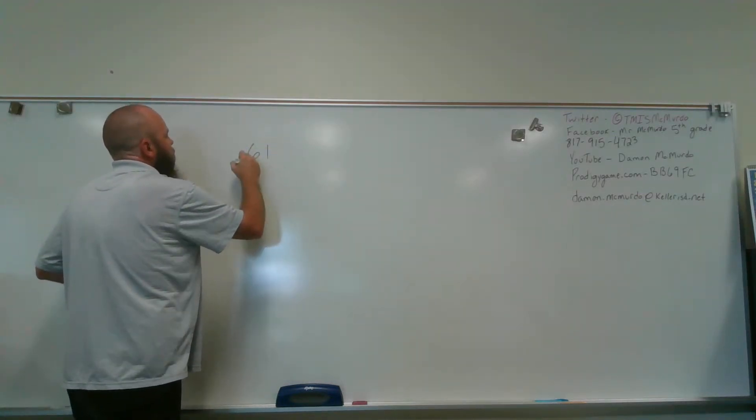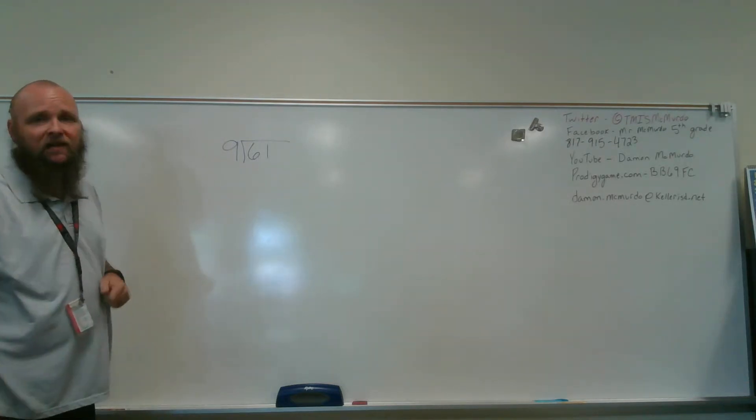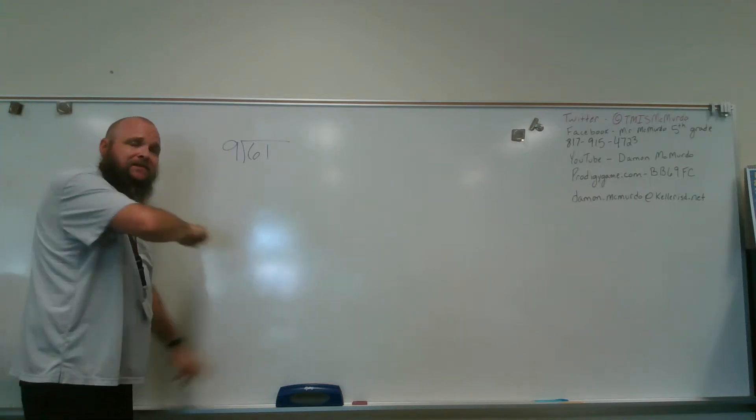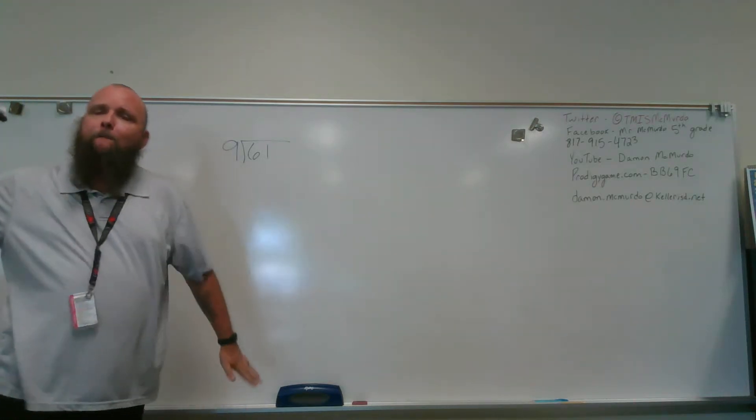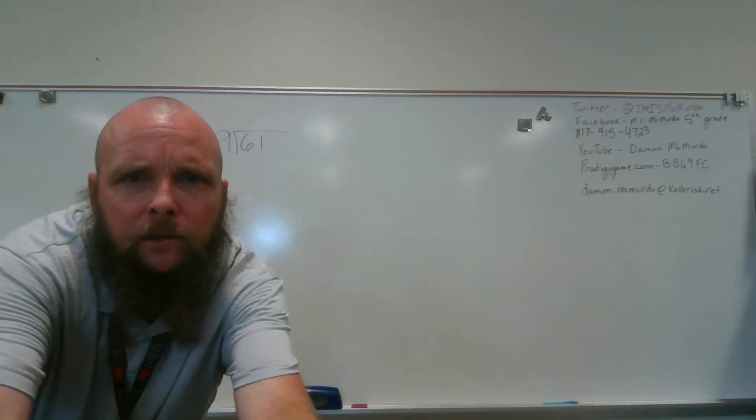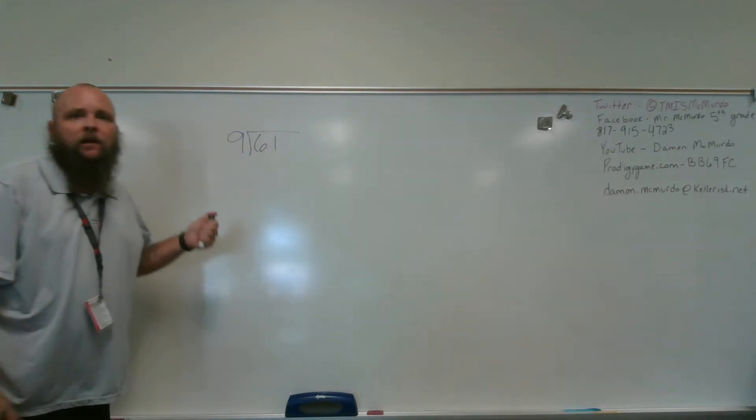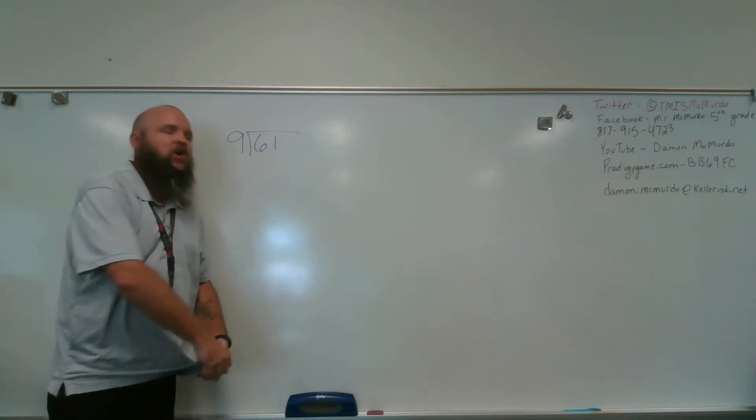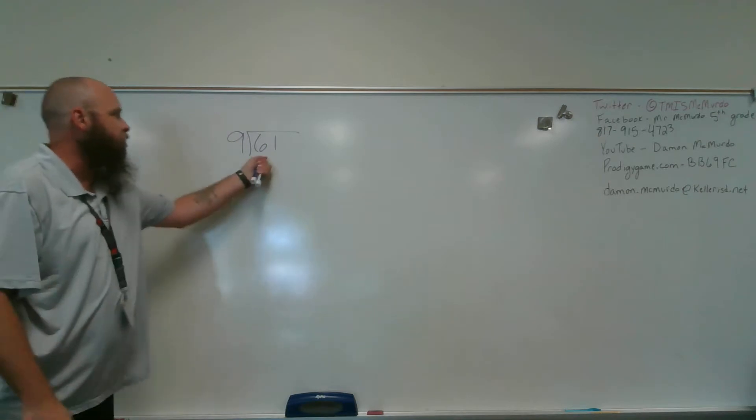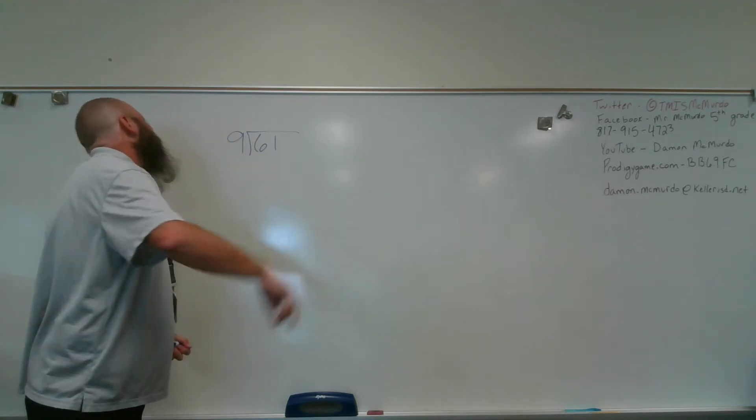Let's look at another one. 61 divided by 9. 9 is my divisor. 61 is my dividend. Single digit divisor. I bust out my multiplication chart, and can you see that very well? Let me go a little bit closer. Is that better? Okay, good. Bust out my multiplication chart. I look at my 9 row. I slide down that 9 row, and I find as close as I can get to 61 without going over.